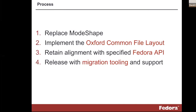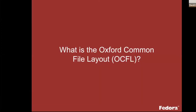What we're mostly changing is just how content is stored on the file system in the backend. We are planning on releasing migration tooling and support from version 3 to version 6, and also all previous versions. The Oxford Common File Layout actually came from the Fedora community, but has become its own specification and its own digital preservation effort that's much broader. There are lots of folks using it that have nothing to do with Fedora.